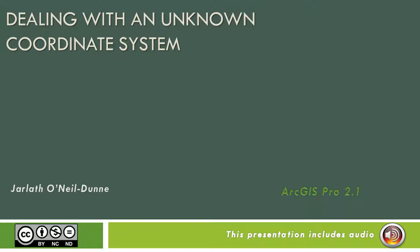In this video, we'll take a look at how to deal with a vector data set in which the coordinate system is unknown. This is extremely frustrating. An unknown coordinate system can be the result of the coordinate system being accidentally deleted, never defined in the first place, or perhaps lost during data conversion, such as moving from CAD to GIS.